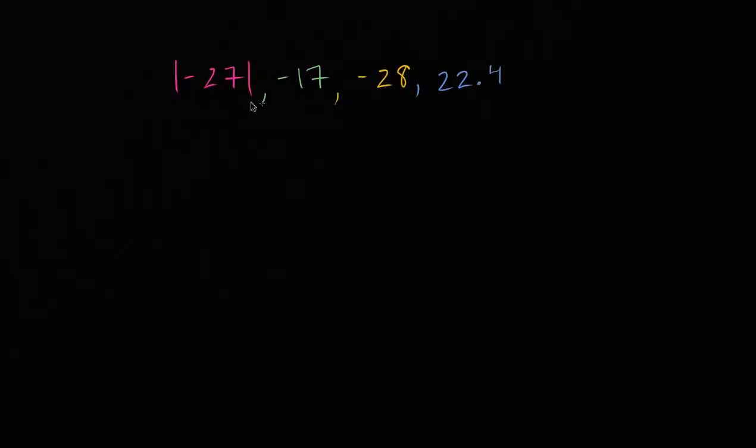So what we have here is four different values, some of them expressed with negative numbers and or absolute value. And what I want to do is sort them from least to greatest, where the least is on the left and the greatest is on the right.